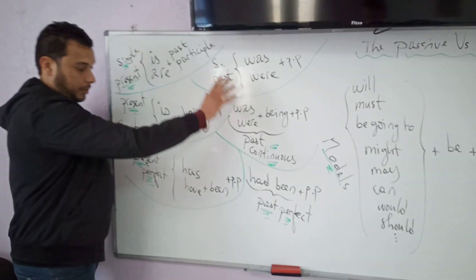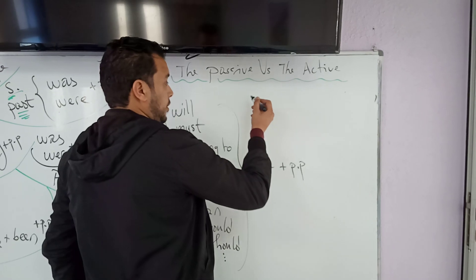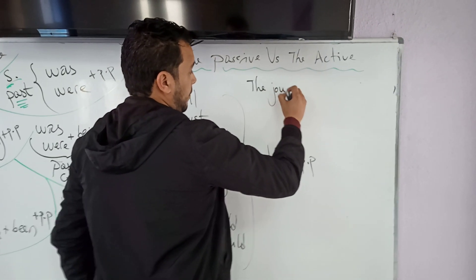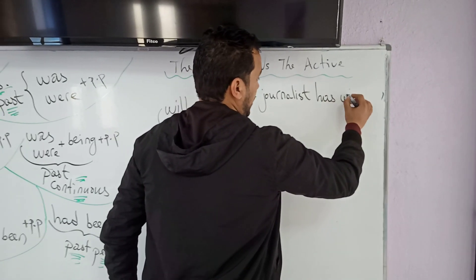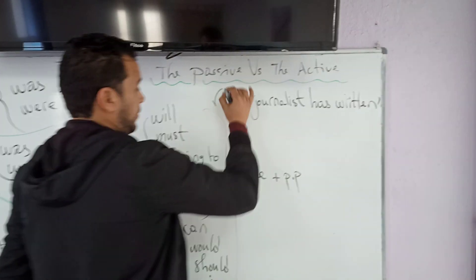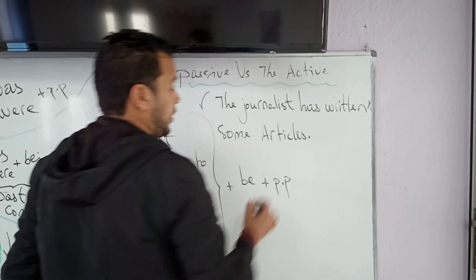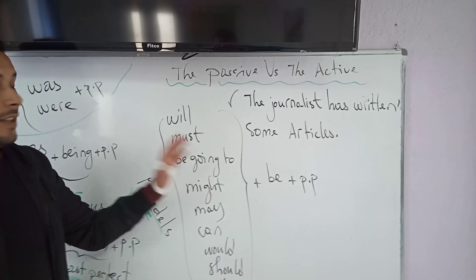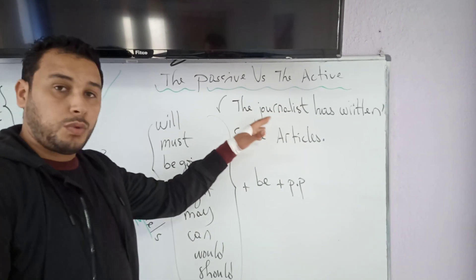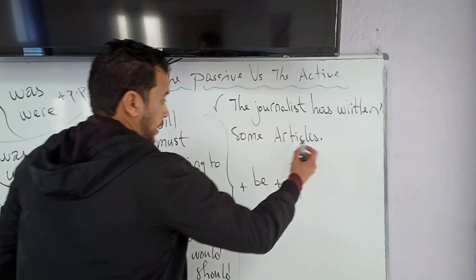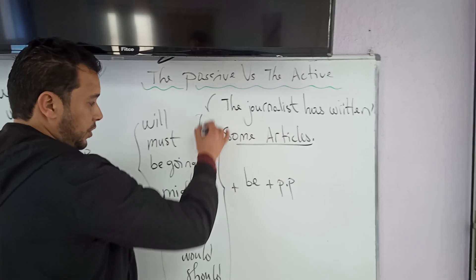PP is an acronym for past participle. In all tenses, for example: 'The journalist has written some articles.' This is a sentence in the active voice because the subject is active and we know who the doer of the action is. 'Some articles' is the object, so let's switch from the active voice to the passive voice.